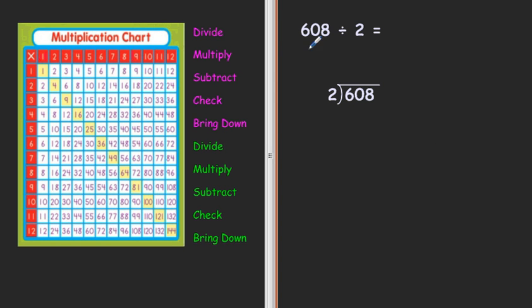The problem you were given was 608 divided by 2. We're going to go through the steps again. First step is to divide.